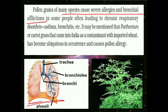Jaisa yeh lungs ka diagram aapko dikh raha hoga — lungs ke andar bronchi present hote hain. Agar hum ek tube ki baat karein particularly, toh use hum bolte hain bronchus, aur dono tubes ki baat karein toh use hum bolte hain bronchi. In dono bronchi mein agar pollen ke kaaran allergy ho rahi hai, then it is known as bronchial affliction.